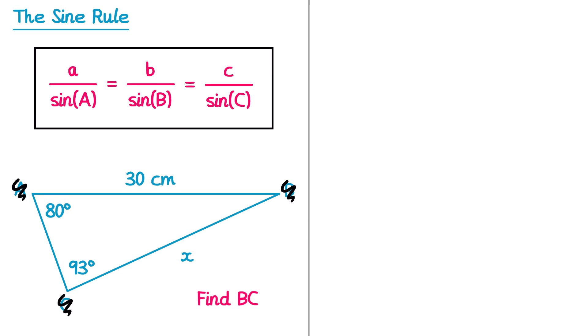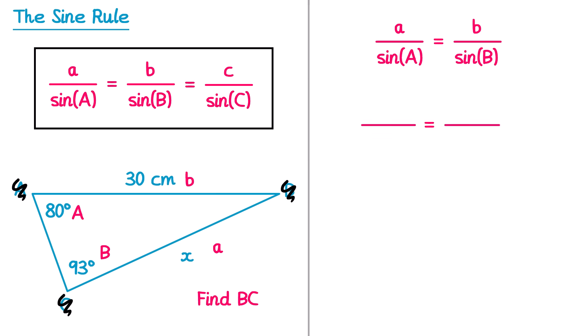We add our labels as before. Lowercase a is the side we're finding — where X is. Capital A is the angle opposite, which is 80°. The other side, 30 centimetres, is lowercase b, and the angle opposite it — 93° — is capital B. We write out the sine rule and substitute: X over sine 80 equals 30 over sine 93.